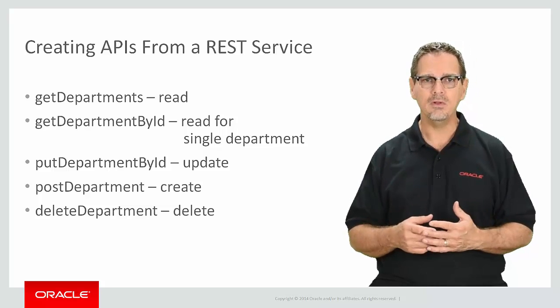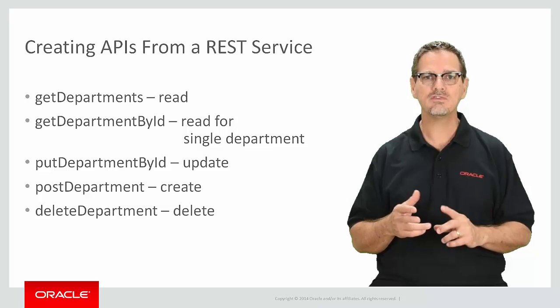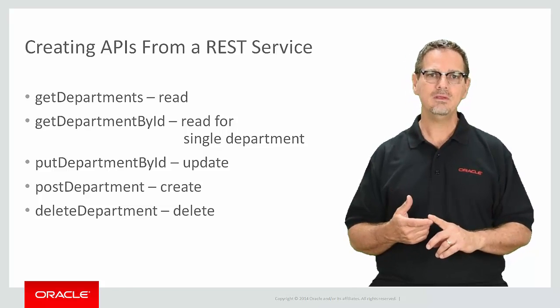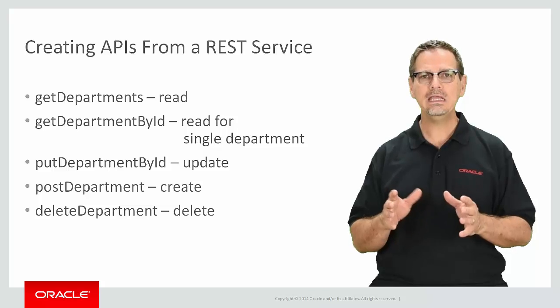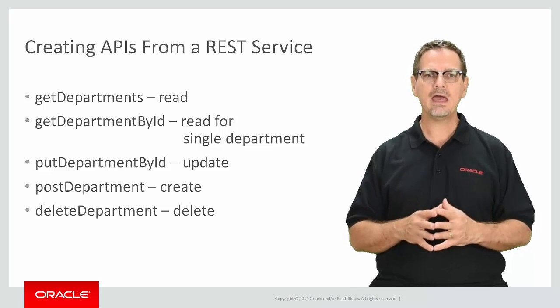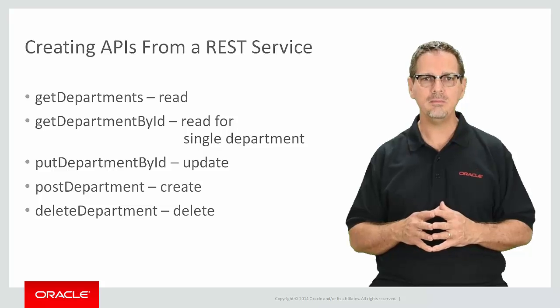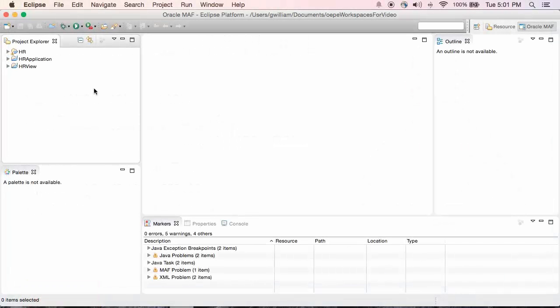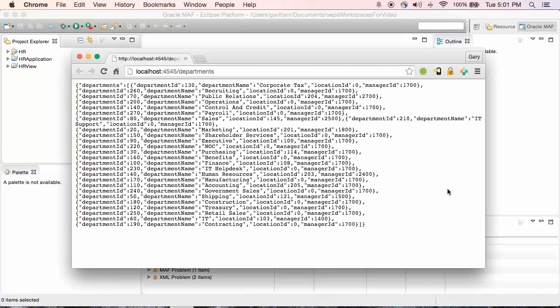In the sample, I'll show how to create APIs for both read methods and the update method. Creating APIs for the delete and the create are the same as the ones I show. Before I create a REST service description, I'll show that I do have REST services available. You can see I have REST services and the service returns a list of departments.